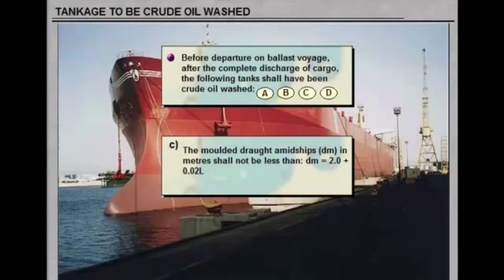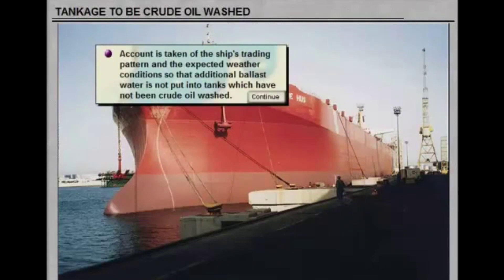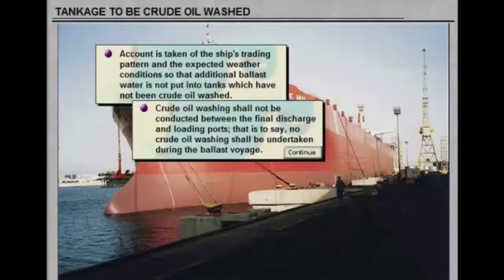(c) The moulded draft midships (dm) in metres shall not be less than: dm = 2.0 + 0.02 × L. (d) The trim by stern shall not be greater than 0.05 × L, with full immersion of the propellers. Account is taken of the ship's trading pattern and expected weather conditions so that additional ballast water is not put into tanks which have not been crude oil washed.